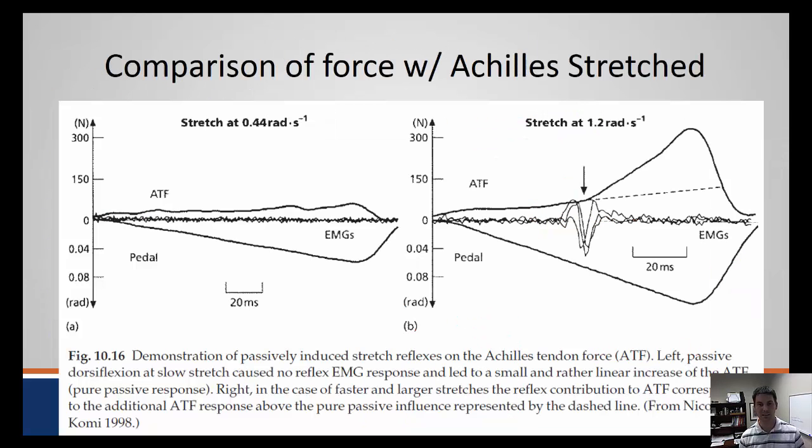If we look at data from the literature, we see that's the exact same case. Here we're looking at the stretching of the Achilles tendon. Here's our force produced, here's our EMG activity which tells us essentially the recruitment of motor units and another marker of force. The higher the EMG value, the greater the force produced. This is showing the rate at which the stretch is going to be done. If we stretch it at a faster rate, we generate a higher EMG. Stretching at 1.2 radians per second versus 0.44 radians per second, you'll see we generate a lot more force.